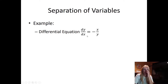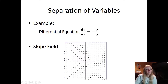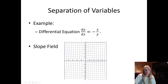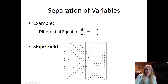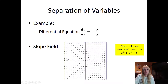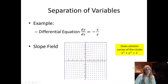So if we have this example, our differential equation is dy/dx = -x/y. If I look at the slope field of this, you should think about why it looks this way. For example, if x equals one and y equals one, then the slope would be negative one over one, which is negative one. By looking at the slope field, we can see that the solution looks like circles — so a solution to this differential equation would be x² + y² equals some constant.